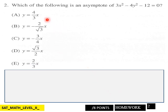Page 2: which of the following is an asymptote of 3x squared minus 4y squared minus 12 equals 0? So which one of these would be an asymptote of this right here? Eight points for page 2.